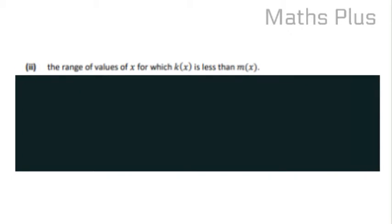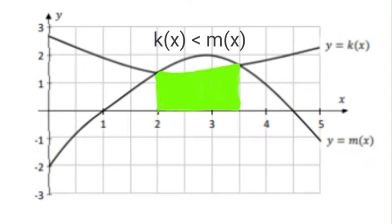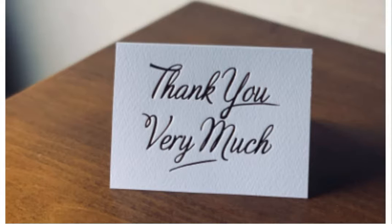So we can write it like this. k of x is less than m of x for x is going to be greater than 2 and less than 3.5. And that's it. So big thanks for watching Maths Plus and keep a watch out for my next exciting video.